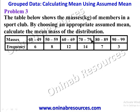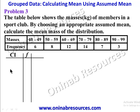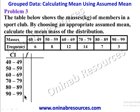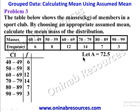Looking at the table: class intervals are 40–49, 50–59, 60–69, 70–79, 80–89, and 90–99, with frequencies 6, 8, 12, 14, 7, and 3. Since we want to pick an assumed mean between 60 and 79, we choose 72.5 as our assumed mean for Problem 3.